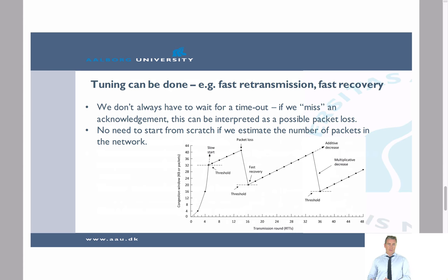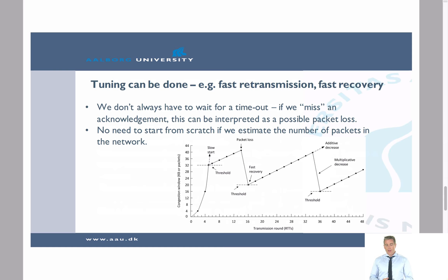Sending a duplicate packet is no big deal as long as the receiver can identify and discard it. Also, using what is called fast recovery, instead of going all the way back to a congestion window of 1, we can start from the threshold value directly. If the network is very congested, the threshold will also have decreased, so we still adjust accordingly — just starting out a bit quicker than with the exponential restart.